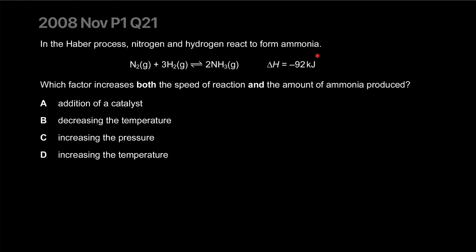In the Haber process, nitrogen and hydrogen react to form ammonia. Which factor increases both the speed of reaction and the amount of ammonia produced? Increasing temperature increases rate but, since it's exothermic, it shifts equilibrium to the left — so that doesn't help yield. Increasing pressure increases collision rate and, since there are 4 moles of gas on the left and 2 on the right, it favors ammonia production. Decreasing temperature produces more ammonia but slows the reaction. Adding a catalyst only affects rate. The best answer is C — increasing pressure.